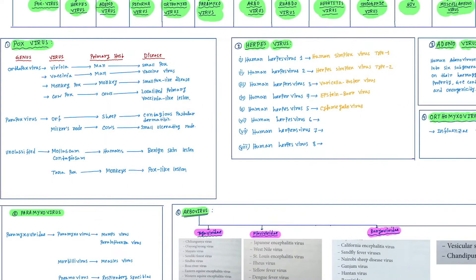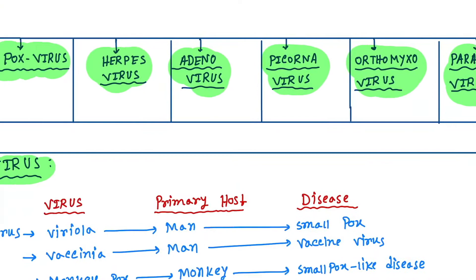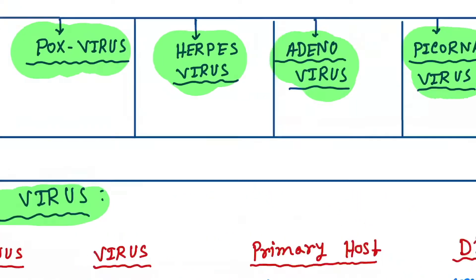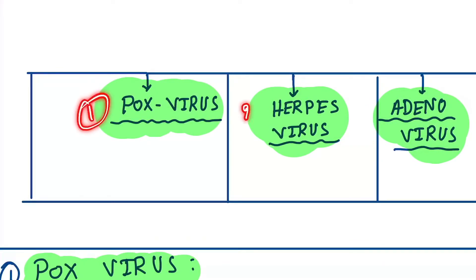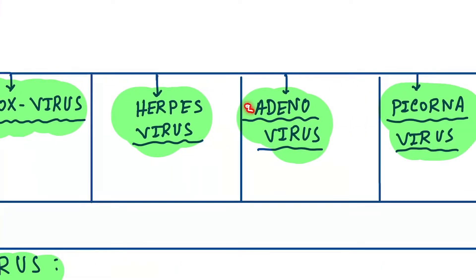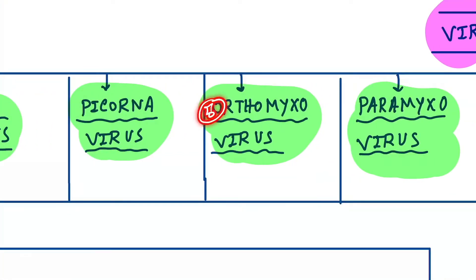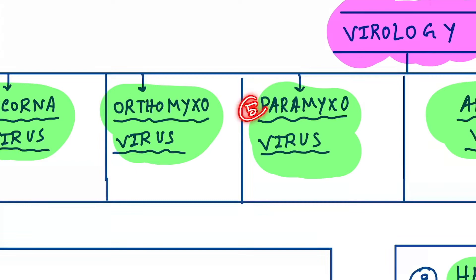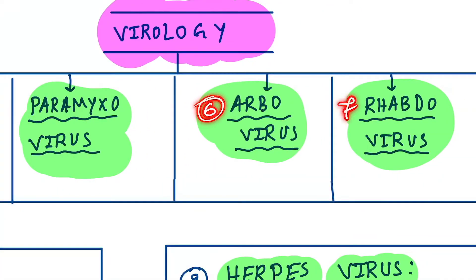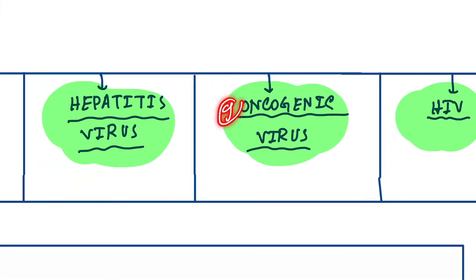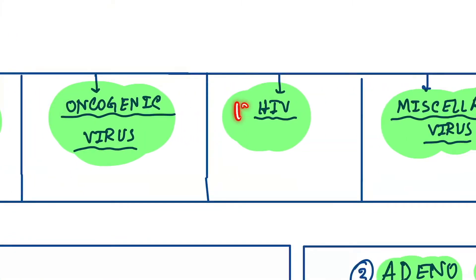Hello friends, today we are going to discuss the classification of viruses. The classes are: poxvirus, herpes virus, adenovirus, picornavirus, orthomyxovirus, paramyxovirus, arbovirus, rhabdovirus, hepatitis virus, oncogenic virus, HIV, and miscellaneous.